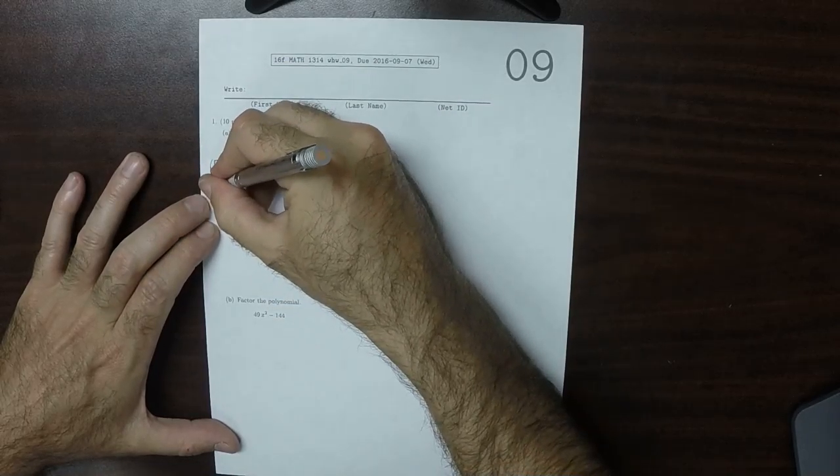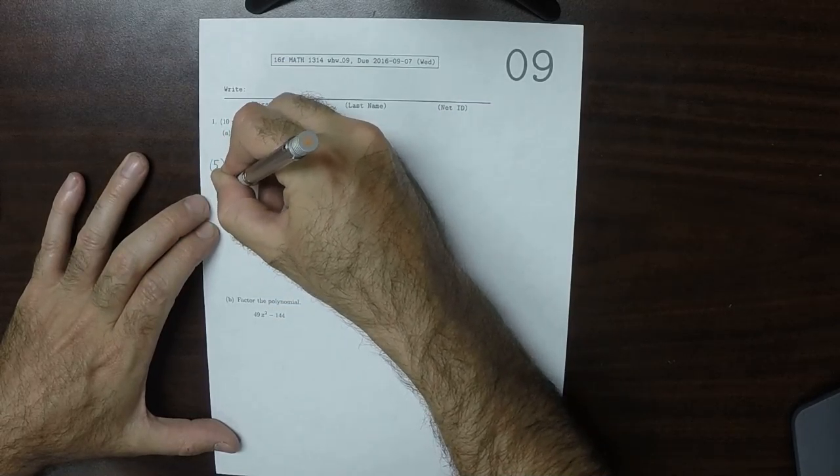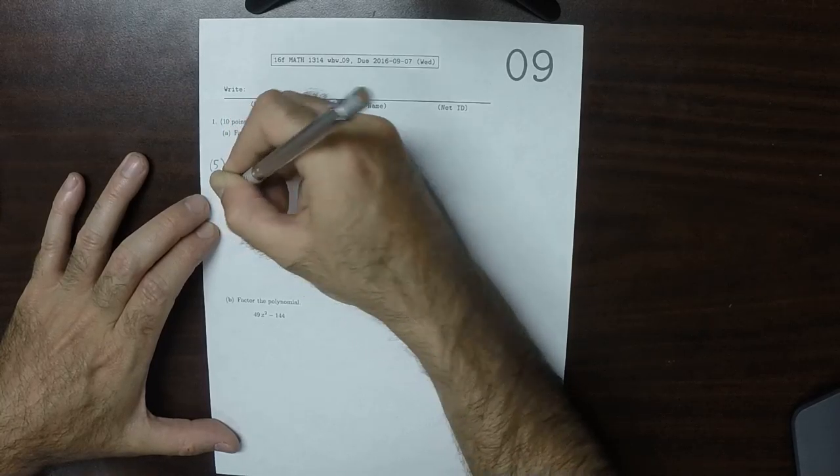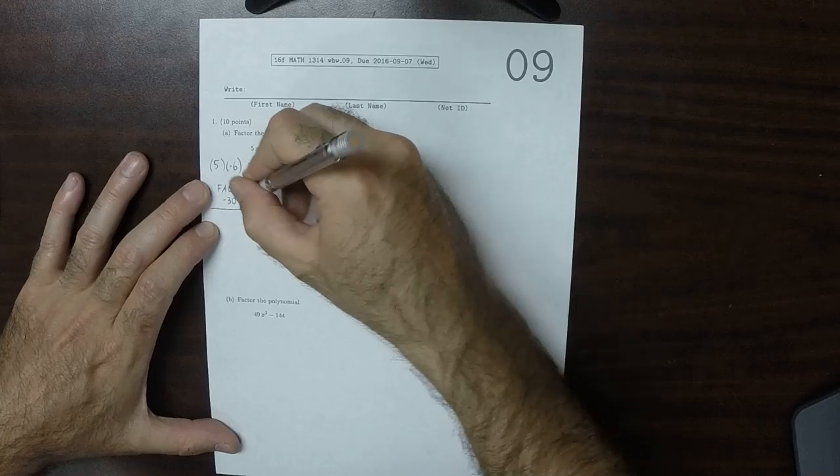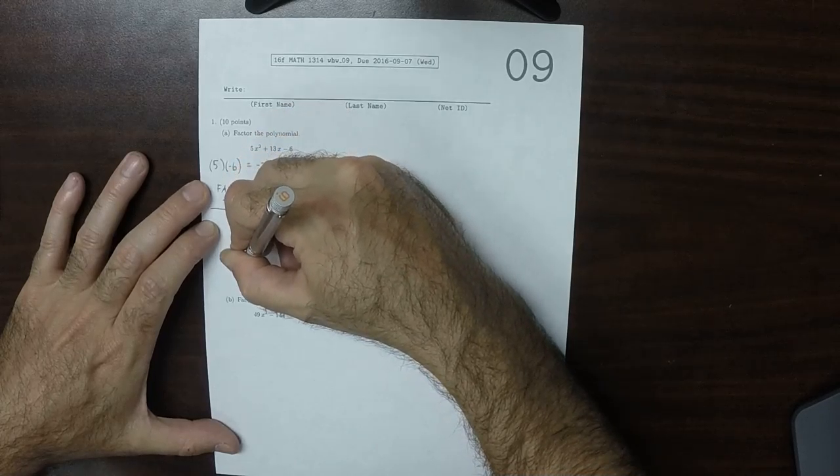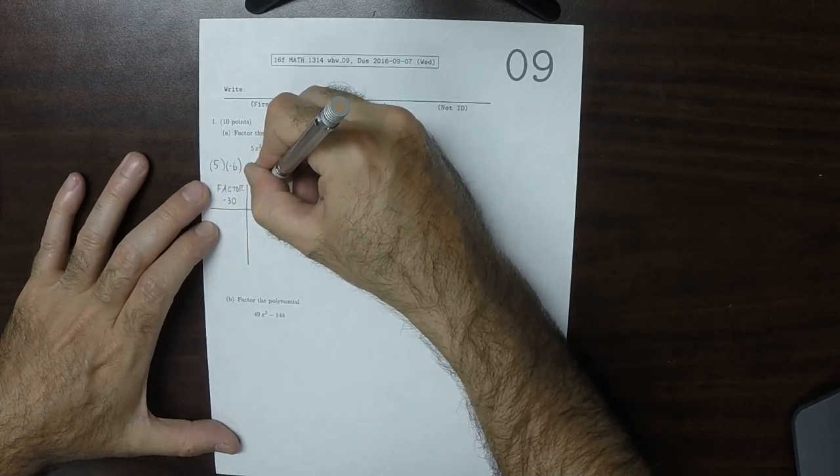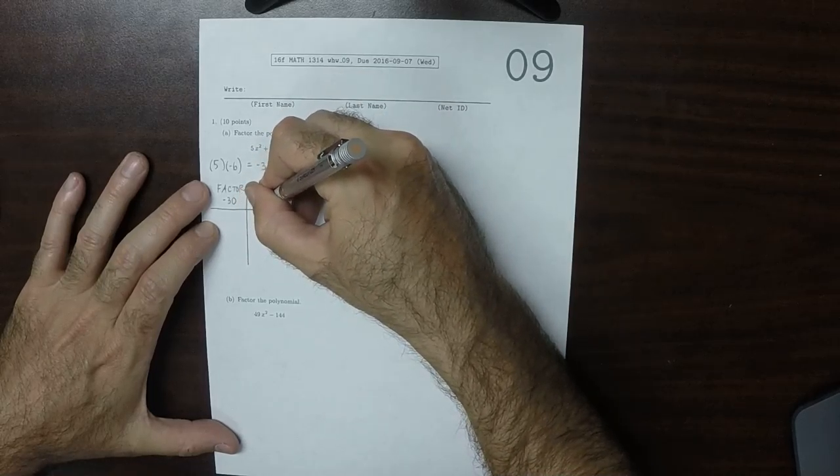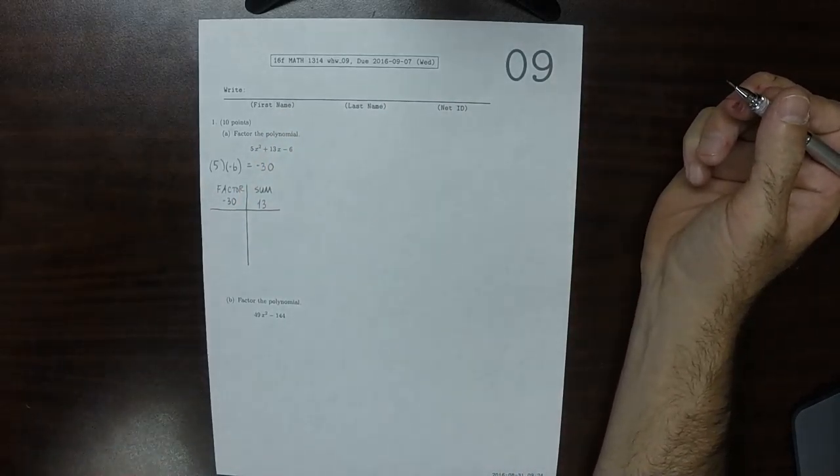So we want to find a factorization of negative 30 where the sum of these factors will give the middle coefficient, 13.